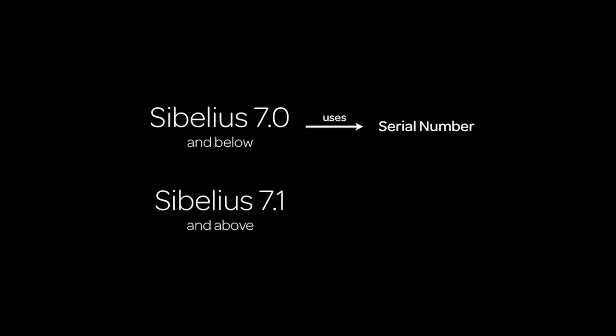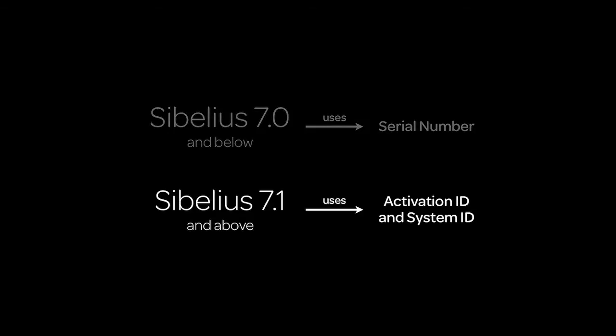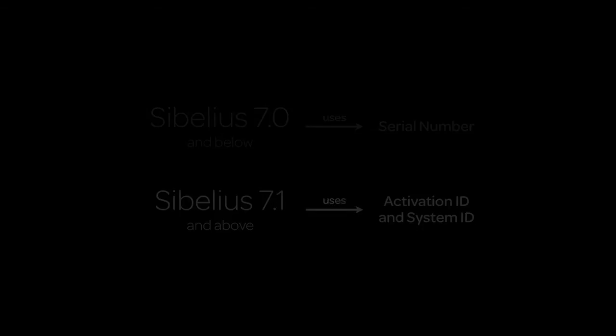In Sibelius 7.0 and earlier, a serial number was used to authorize the software. Sibelius versions 7.1 and higher, however, use System ID and Activation ID. Once your copy of Sibelius has been upgraded to version 7.1 or higher, you'll no longer be able to register previous versions of Sibelius, and you will no longer be able to use your original Sibelius serial number.